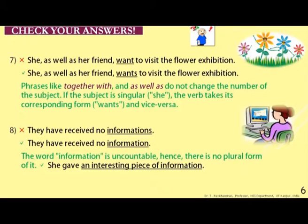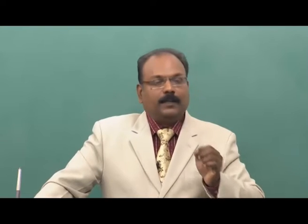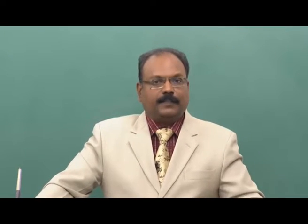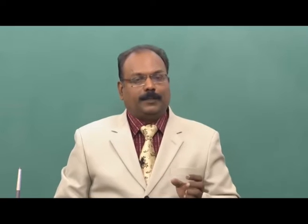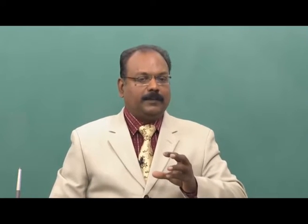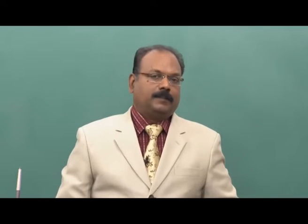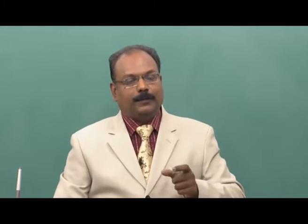Example eight concerns uncountable nouns like 'information.' 'They have received no informations' is wrong — the correct form is 'They have received no information.' The word 'information' is uncountable and has no plural form. However, if you want to indicate one particular piece of it, you may say 'She gave an interesting piece of information', or 'two pieces of information', using 'piece of' to indicate quantity.